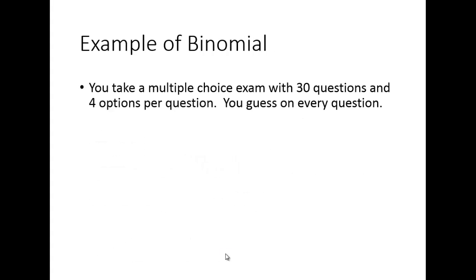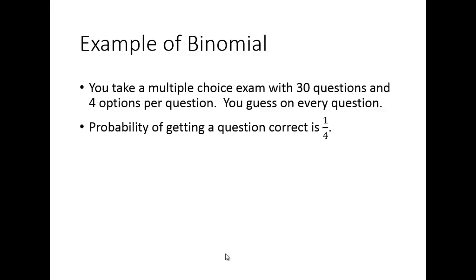Let's do an example. You're taking a multiple choice exam with 30 questions, four options per question. Instead of reading the questions, you're just going to flat out guess — maybe b, then d, then a, and so on. The probability of getting a question correct is 1/4, and missing it is 3/4.